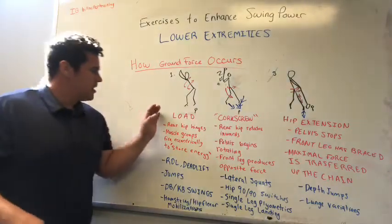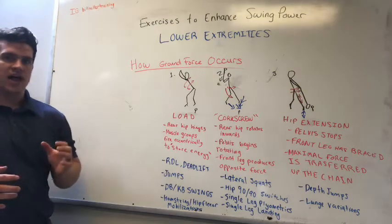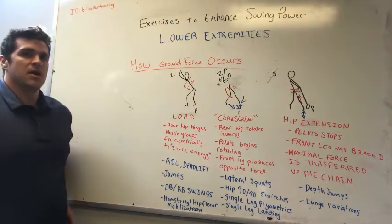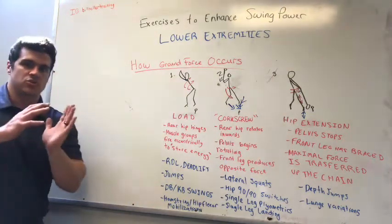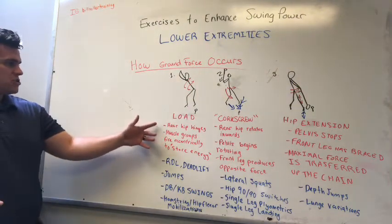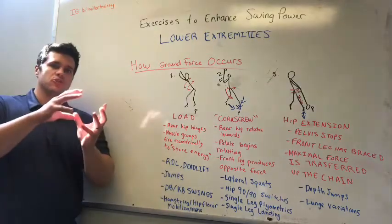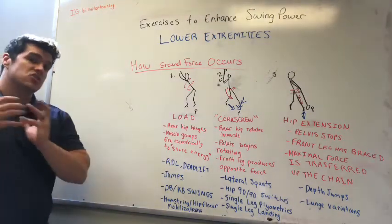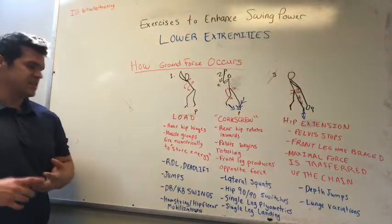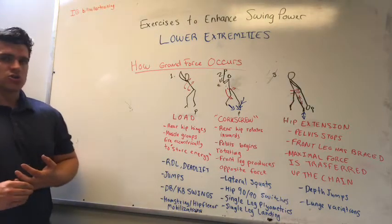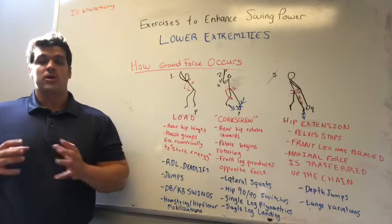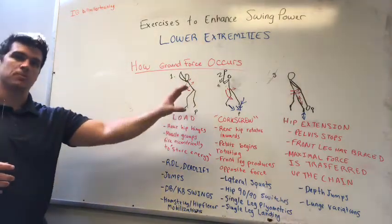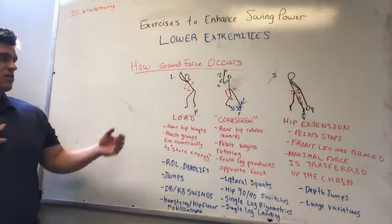The first thing we have to master is the load. Loading the hips allows for a ton of force development, similar to bending down to jump or sprint — hip extension matters a lot, and it all starts with the ability to hinge and create hip flexion going backwards. The rear hip hinges, muscle groups fire eccentrically, and lengthen to create a stored energy effect. Great ways to train this include hip mobility drills, RDLs, deadlifts, jumps, and kettlebell swings, while ensuring hamstrings and hip flexors are mobile. If you can't hinge properly, you won't produce much force in your swing; if you can hinge well, you're set up for success down the rest of the kinetic sequence.